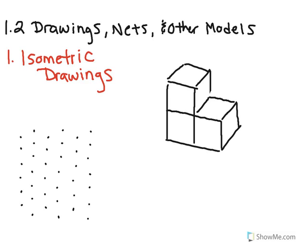The first drawing is called isometric drawings. Isometric drawings are drawn on dot paper like this. They can be a little tricky to get used to, so practice definitely makes perfect. There's a link at the top of my Moodle page for isometric graph paper — print some off at home and practice. You will be quizzed and tested over this, so you need to start getting used to how the paper works.